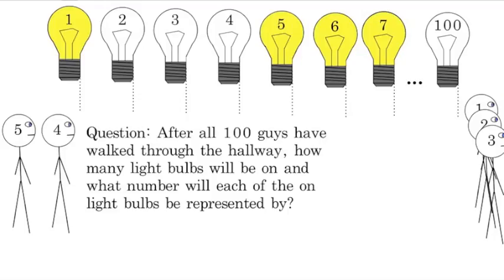Just to recall, we have 100 light bulbs in the hallway, each represented by a number, and we also have 100 guys lined up, each represented by a number. And the rule is that each guy goes through and pulls the switch of all the light bulbs represented by a multiple of his number. So the third guy pulls the switch of every third light bulb, and the question is, after all 100 guys have walked through the hallway, how many light bulbs will be on, and what number will each of the on light bulbs be represented by?